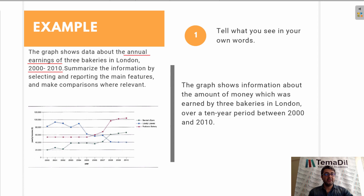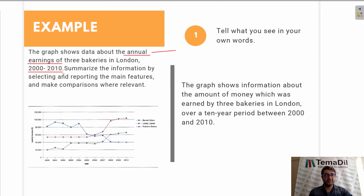In some cases, you could also use alternative words. For example, rather than using 'annual', you could use 'yearly'. Rather than using 'earning', you could use 'profit'. And for the time period, you could use 'a decade'.